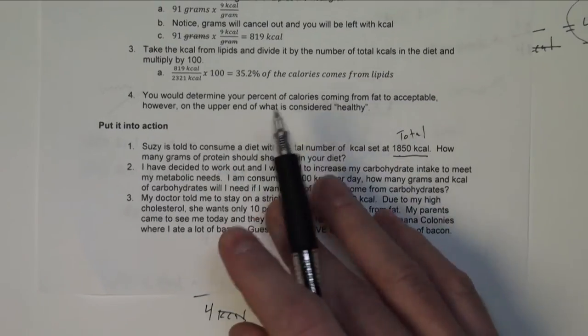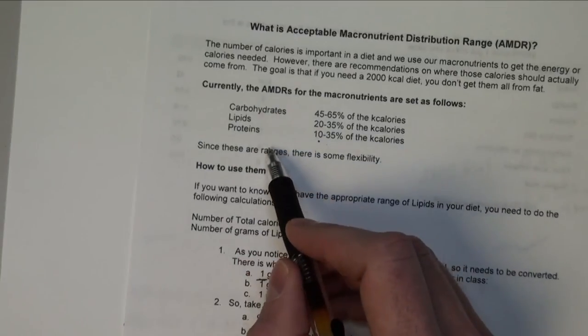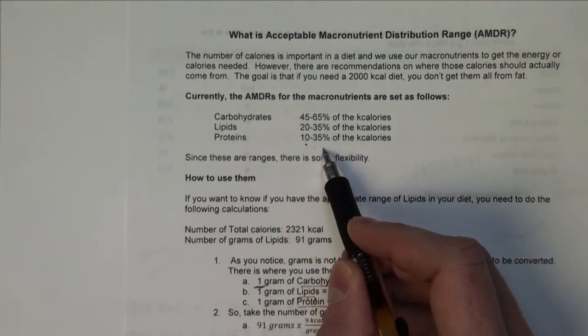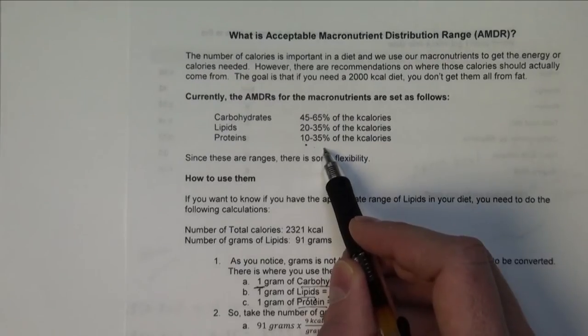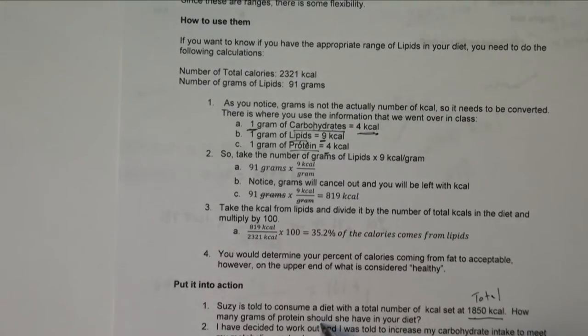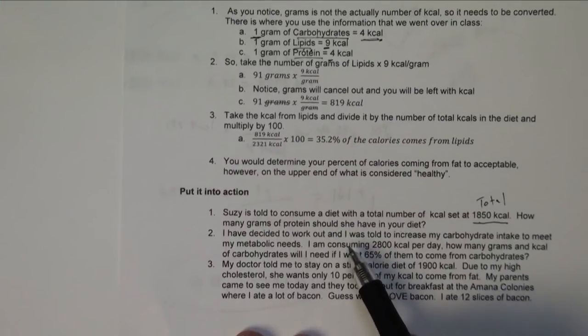And since we're dealing with protein, we'll need to come back up here and look and see that we need 10 to 35% of the calories should actually come from protein. So we'll need to utilize that to figure out how many grams that she should have in that diet to have a proper diet.